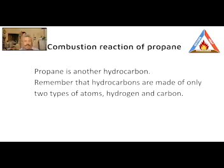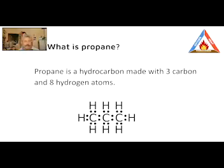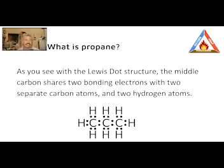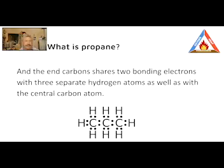Remember, hydrocarbons are made of only two types of atoms: hydrogen and carbon. In propane's case, the hydrocarbon contains three carbon atoms and eight hydrogen atoms. As you can see with the Lewis dot structure, the middle carbon shares two bonding electrons with two separate carbon atoms and two hydrogen atoms. And the end carbon shares two bonding electrons with three separate hydrogen atoms as well as with a central carbon atom.